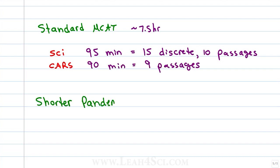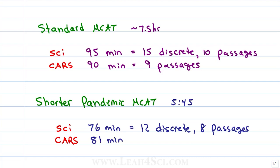Since the shorter pandemic MCAT is only 5 hours and 45 minutes, we have to adjust the strategy slightly. You have 76 minutes for the science passages which now contain 12 discrete questions and only 8 passages, and 81 minutes for the CARS section which now also has just 8 passages.